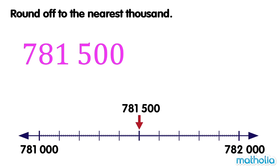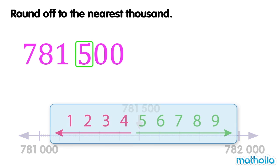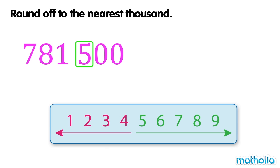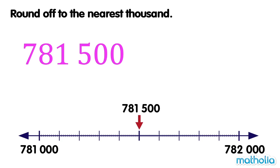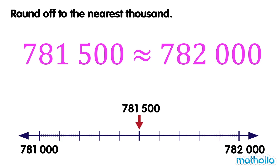Let's round off 781,500 to the nearest thousand. The digit in the hundreds place is 5. Digits that are 5 or more are rounded up. So 781,500 is rounded up to 782,000. To the nearest thousand, 781,500 is approximately equal to 782,000.